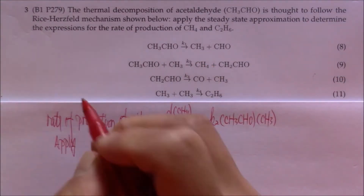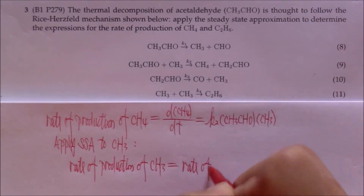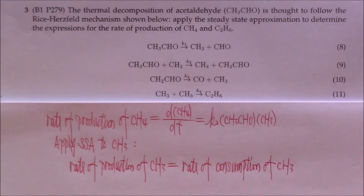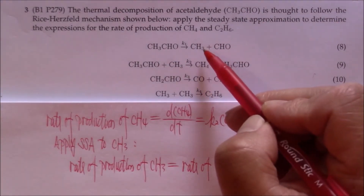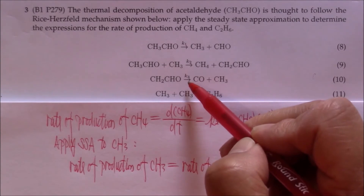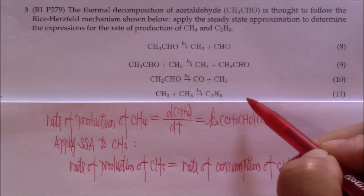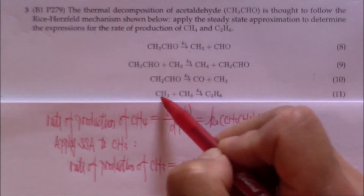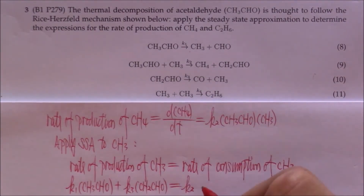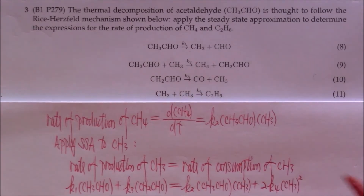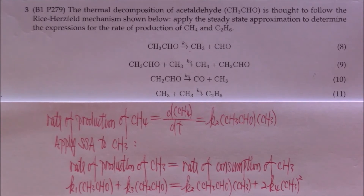Let's put it down. As we can see from the elementary reactions, the first reaction and the third reaction will produce CH3. The second reaction and the fourth reaction will consume CH3. When we look at this steady state approximation, we find that we introduce another intermediate. You want to eliminate intermediates — you don't want to introduce new ones.